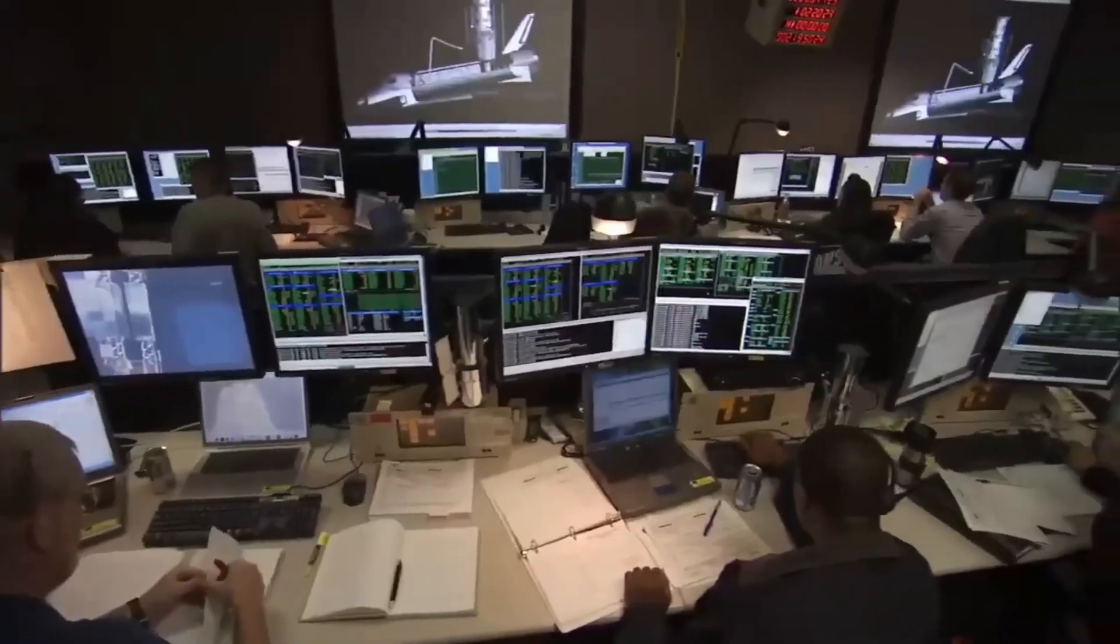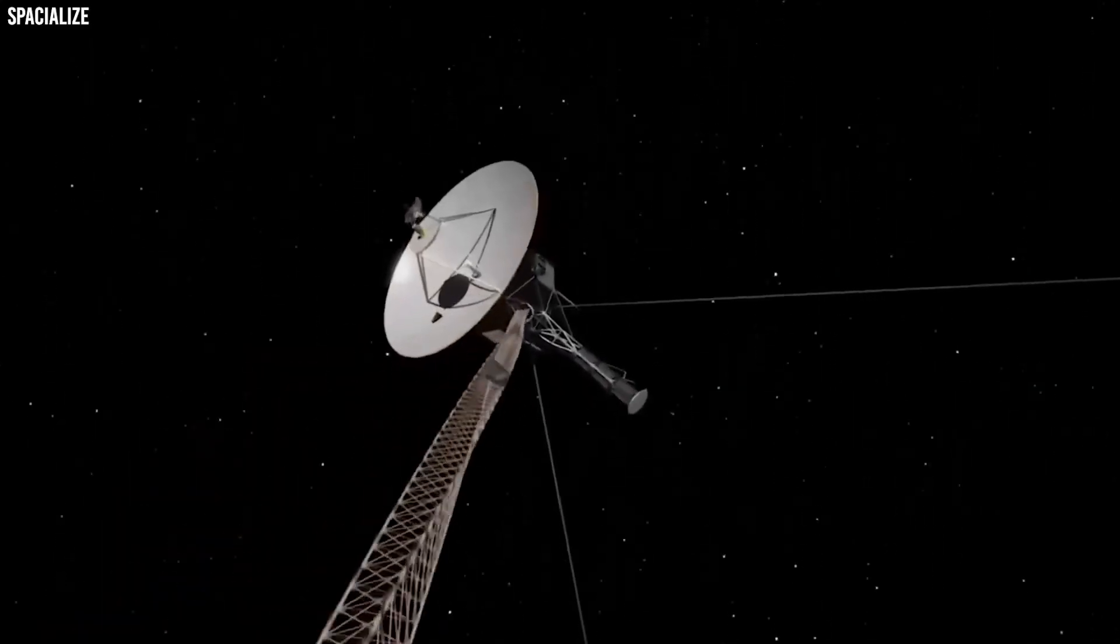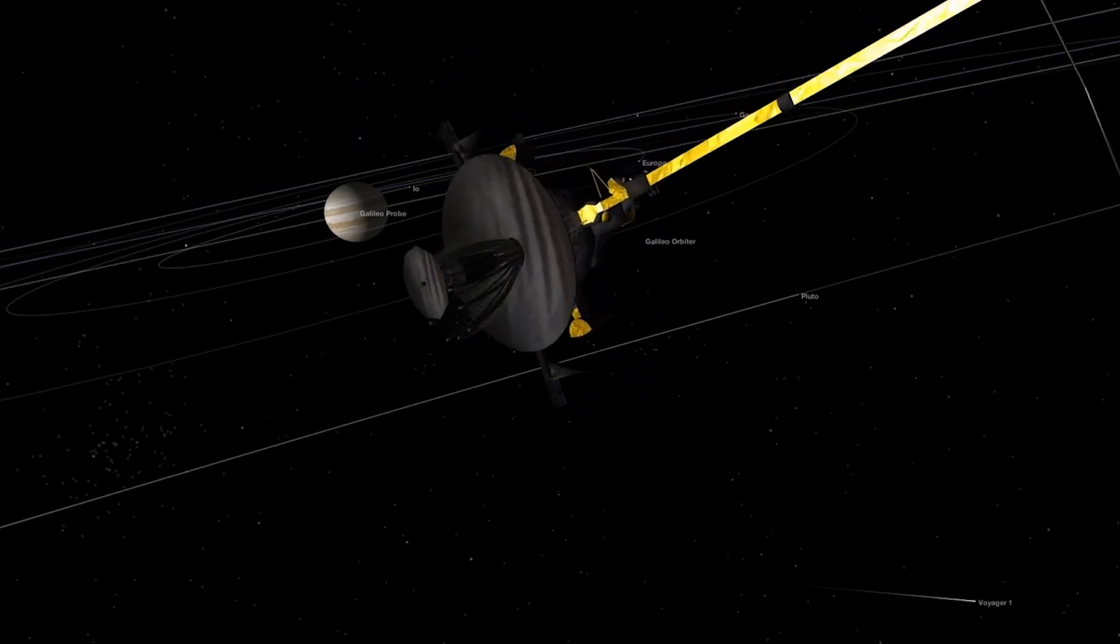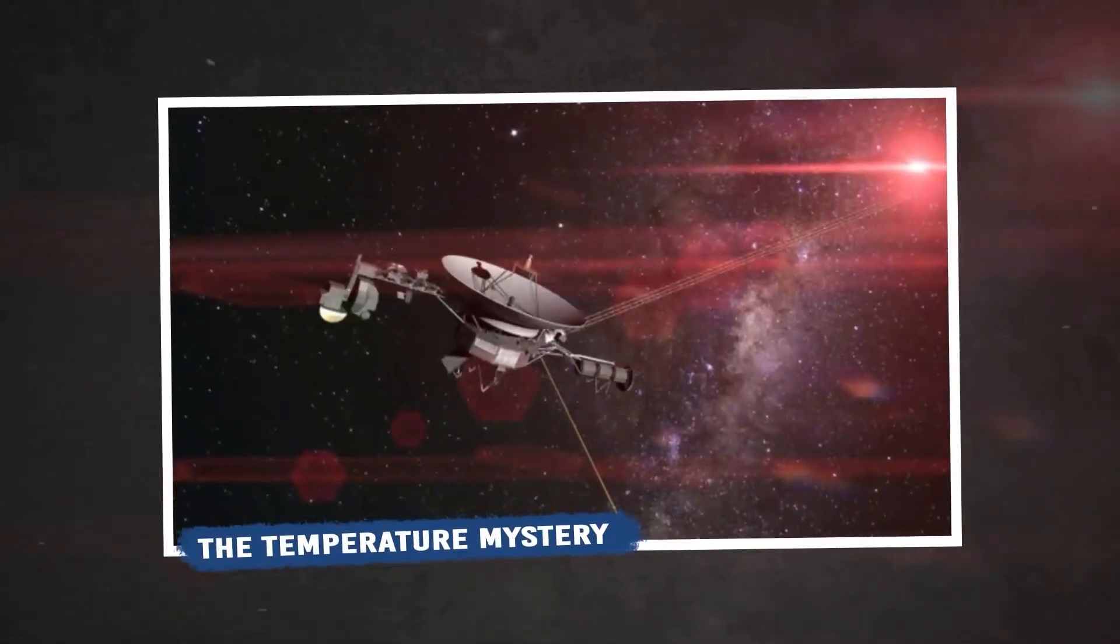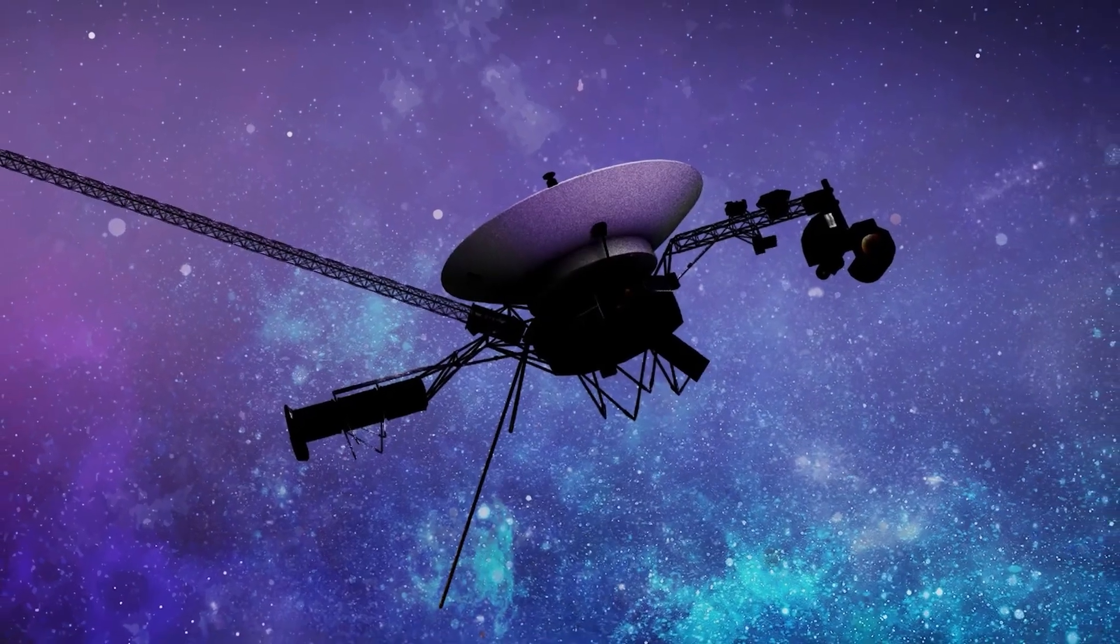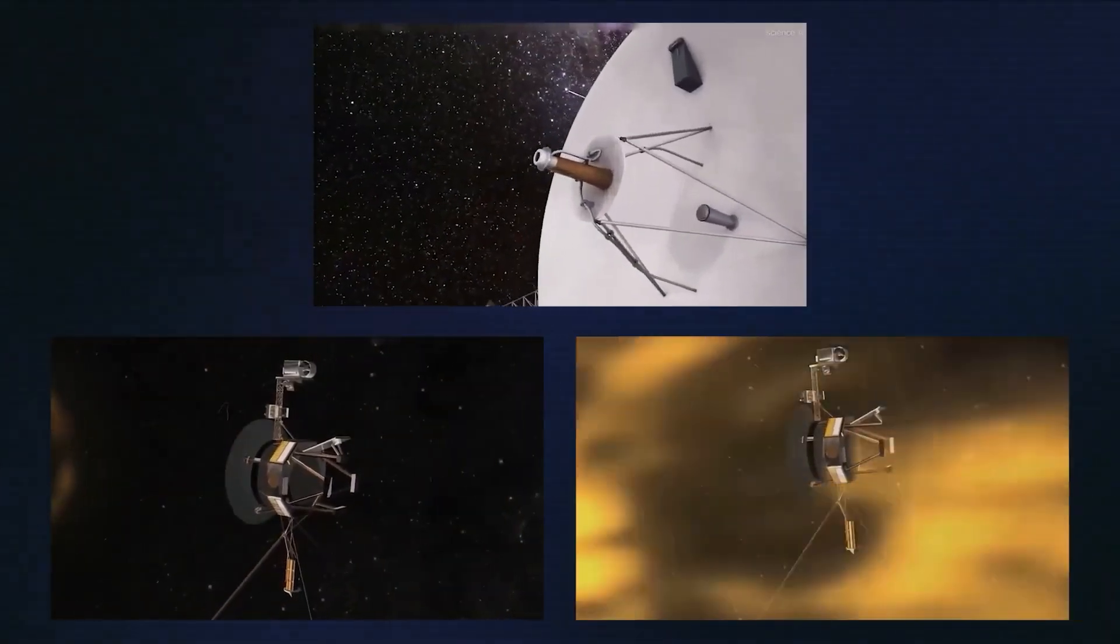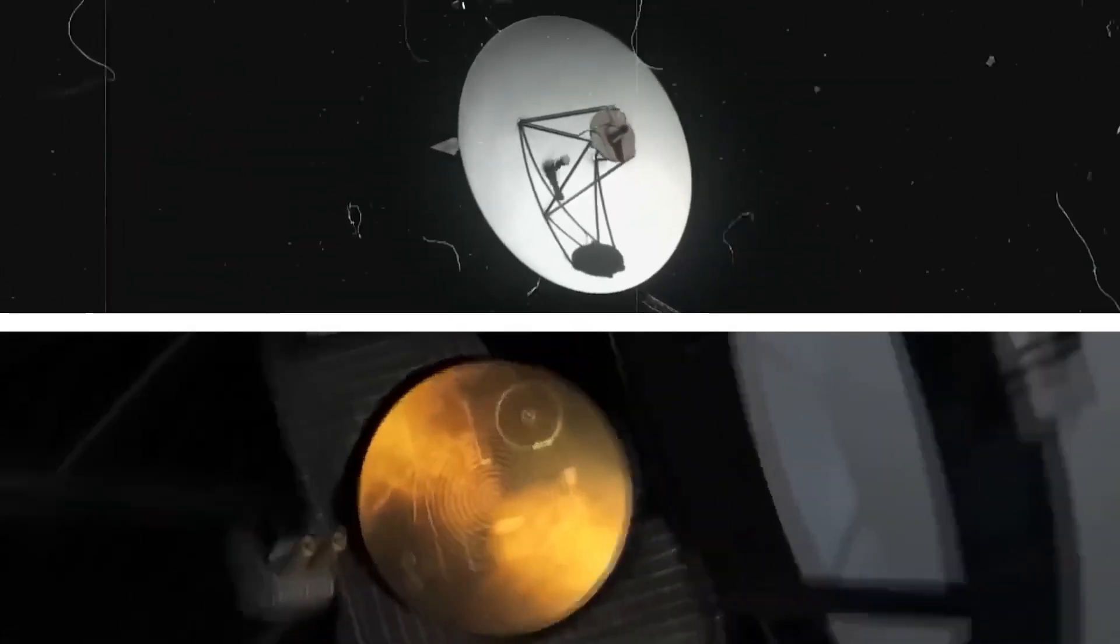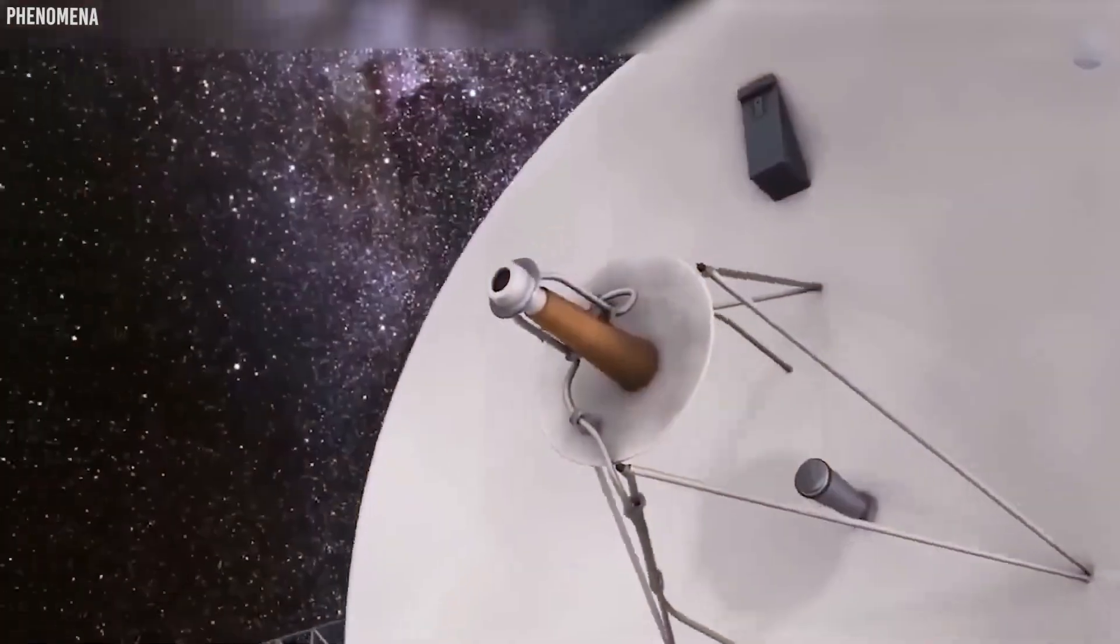After its encounters with Jupiter and Saturn, Voyager 1 entered what engineers called the cruise phase—a seemingly endless journey through the outer solar system. With no more planets to visit, public interest waned as the spectacular images stopped coming. NASA's focus shifted to newer missions like the Hubble Space Telescope and the Mars rovers. But Voyager kept on going, traveling about a million miles every day, steadily moving toward the edge of our solar system, wherever that might be.